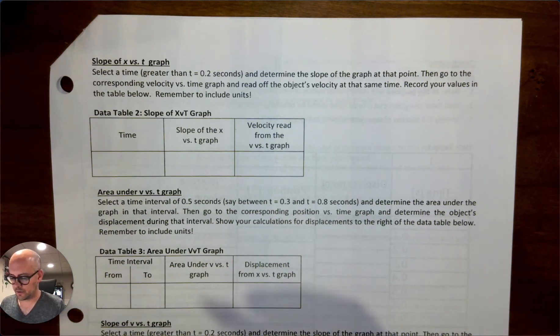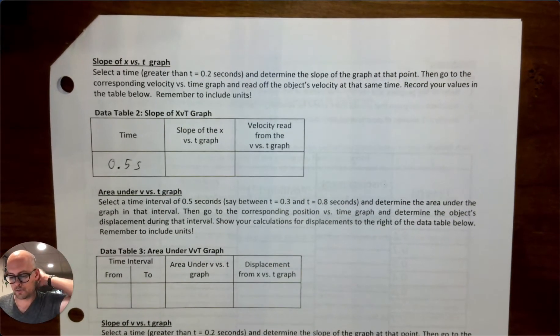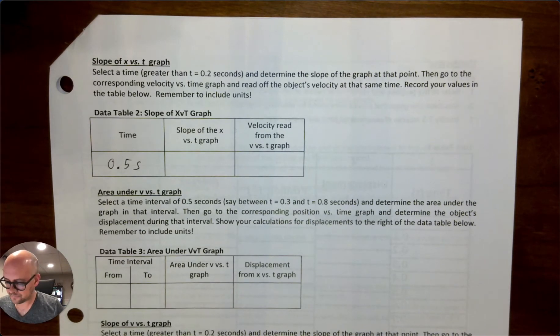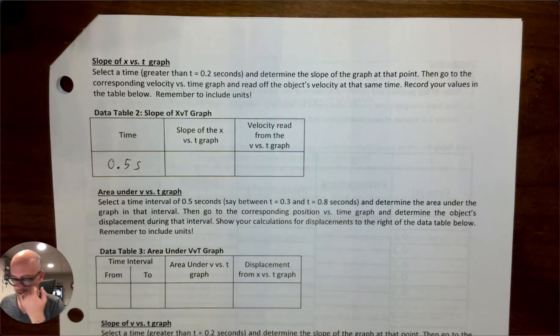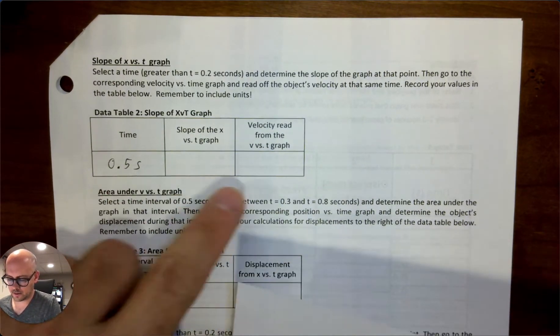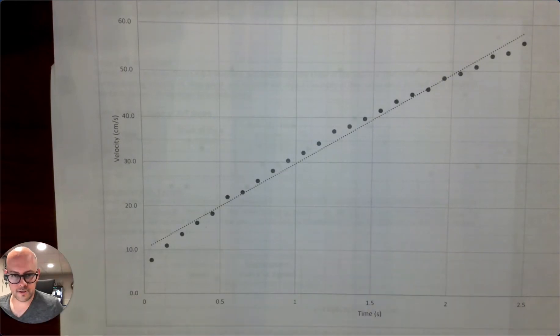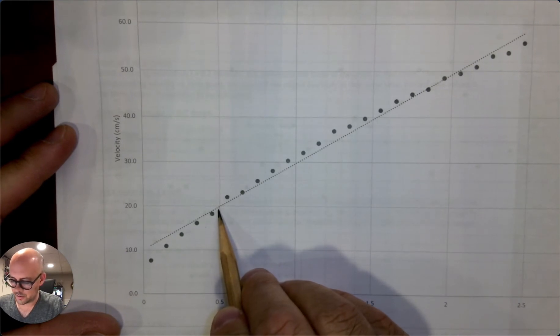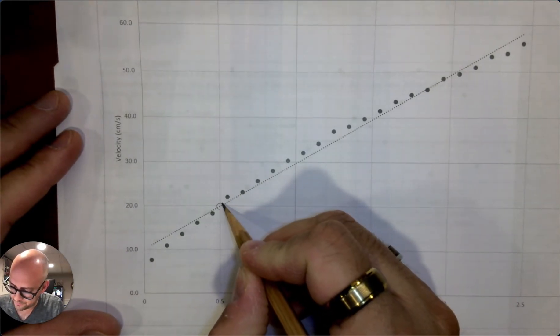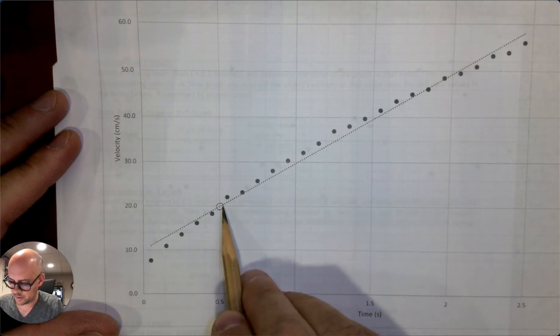So just for my simplicity, I'm going to choose a time of 0.5 seconds. So this is important. It identifies the moment that you're going to use on the graph. The first one says slope of the position versus time graph. The second one says velocity read from the velocity versus time graph. So I'm going to do the velocity first. So all you're doing is going to 0.5 seconds and recording the velocity. Really important. Your trend line now represents your data.